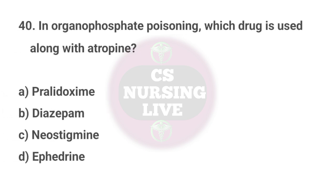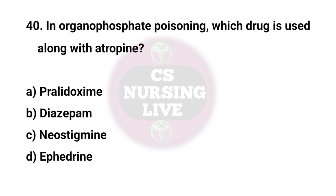Question No. 40. In organophosphate poisoning, which drug is used along with atropine? Right answer is A. Pralidoxime.